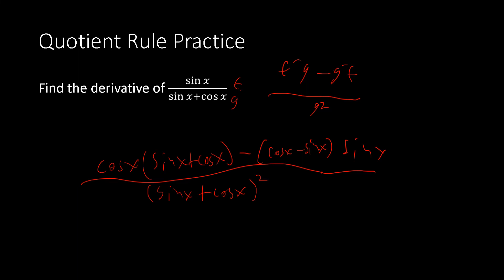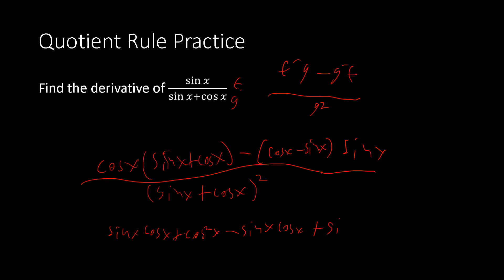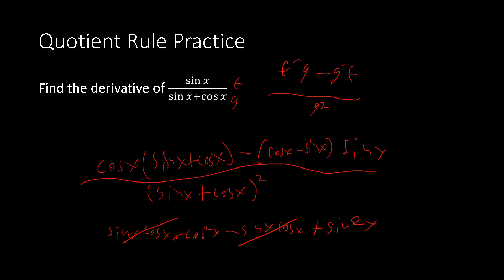And f is sin(x). This time I'll multiply it out because with trig quotients things often simplify nicely. Distributing: we get sin(x)cos(x) + cos²(x) minus sin(x)cos(x) plus sin²(x). The sin(x)cos(x) terms cancel, and cos²(x) + sin²(x) = 1. So our final answer is 1 / (sin(x) + cos(x))².